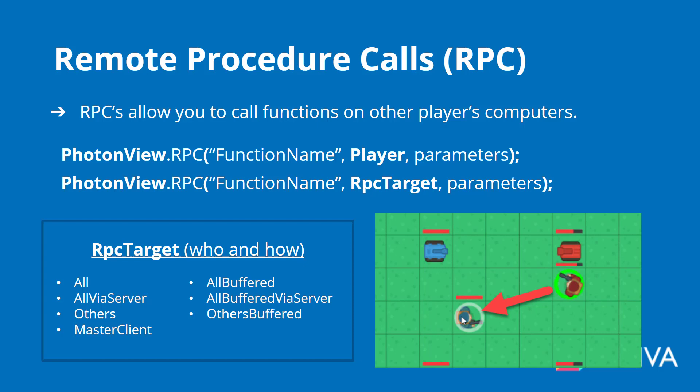Hey everyone. In this lesson we are going to go over two important concepts before we can continue on with our project. These two concepts are going to be very important in actually being able to relay information from one computer to another inside of Photon. The first is Remote Procedure Calls, or RPCs.